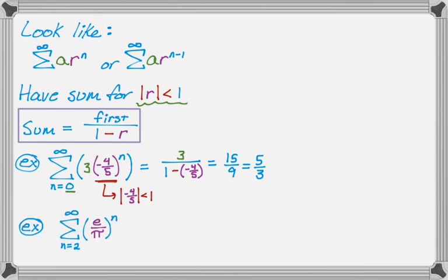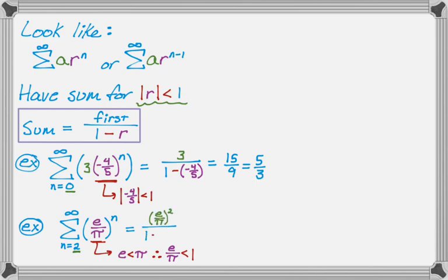Here's another common type: the sum from N equals 2 to infinity of the quantity e over pi to the N. Sometimes you'll see irrational or transcendental numbers where you have to think carefully about whether R is in the needed range. We know that e is less than pi — that's a really good fact to carry with you — so e divided by pi is definitely less than 1, meaning there is a sum. The first term is found by plugging in N=2, giving e over pi squared, over 1 minus e over pi.